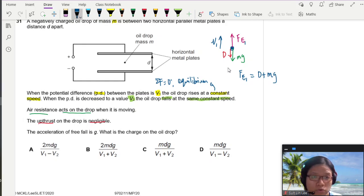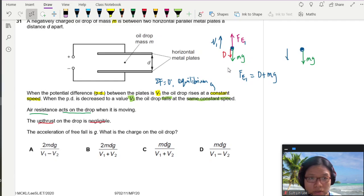So I'm going to redraw the oil drop to readjust the forces. Obviously, weight will still be in the same direction, mg. But now your oil drop is travelling downwards. So this is your V2. Your potential to V2. Let me adjust this one. Okay? And this is V1.